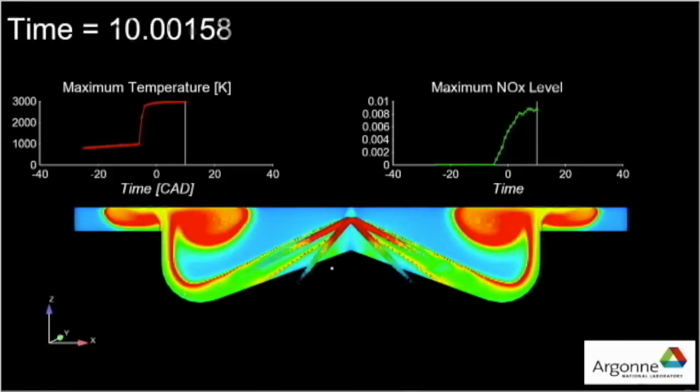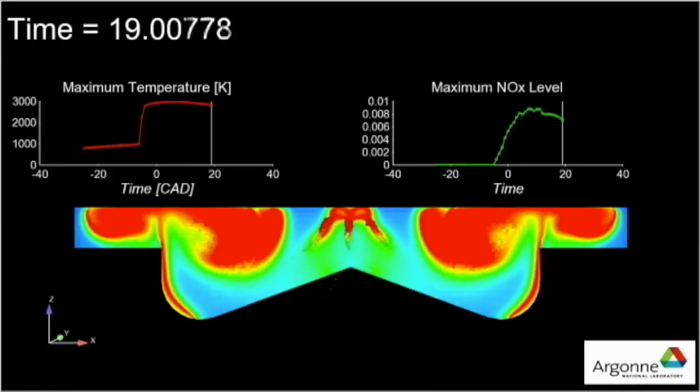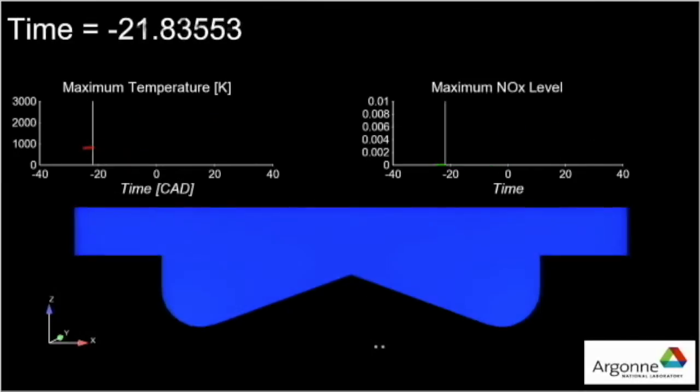The graphs above the video plot the maximum temperature and nitric oxide formation relative to crankshaft angle location.